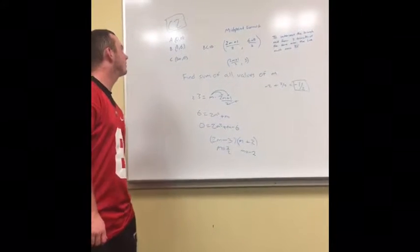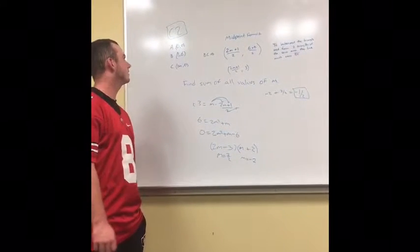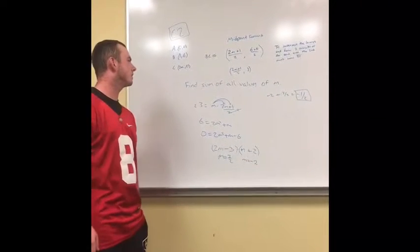Okay, so I had a problem with C2, and it gives you three points that make a triangle. A is (0,0), B is (1,6), and C is (2M, 0).